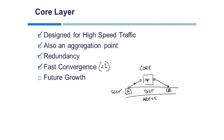At worst, you might miss a packet or two. By adding a core layer, you can even accommodate a building C and future growth. The core layer is all about speed — and that's our goal in the hierarchical model.